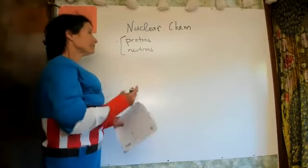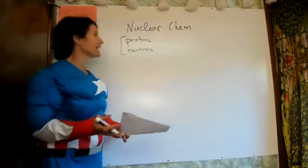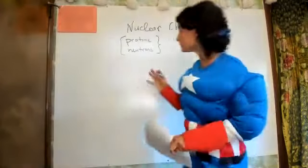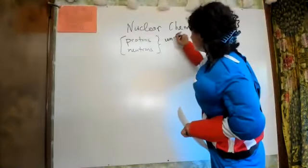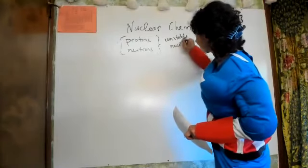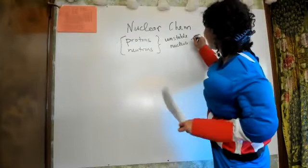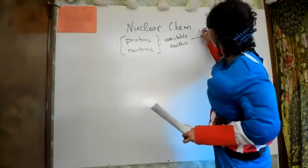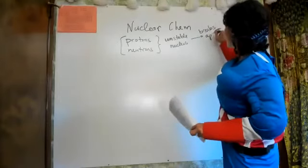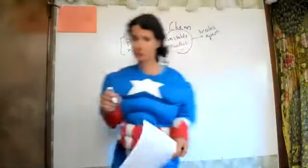There is an ideal ratio of protons and neutrons. When you have the wrong ratio of protons and neutrons, you get an unstable nucleus, and it breaks apart. That's what nuclear chemistry is — the study of unstable nuclei.